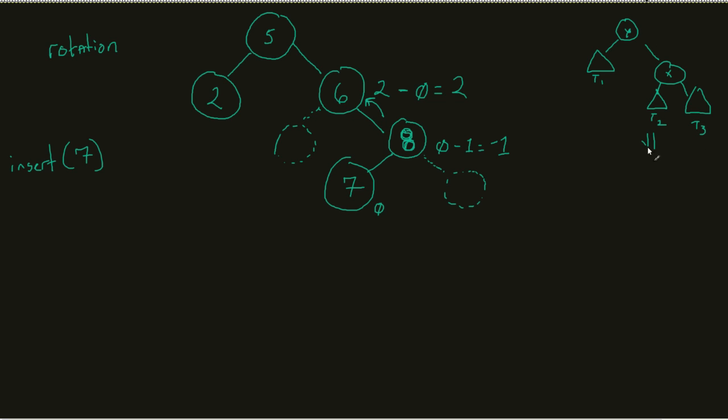And to make my, in this case, left rotation, I'd see that the Y and the X would come into play, same as before, and Y would inherit that T2 while X still retains its T3.